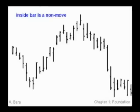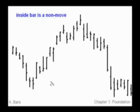An inside bar is considered a non-move and we will treat it as if it's invisible. Here the market has made an up move — higher bar low, higher bar high — and then we get this inside bar. We will simply ignore it. Instead we'll look at the following bar to see if it has a higher low and a higher high compared to the bar before the inside bar. If we do have that — and we do — the uptrend continues.